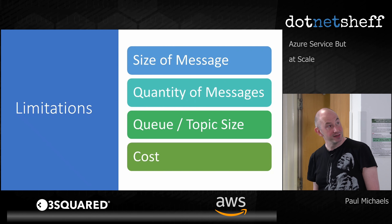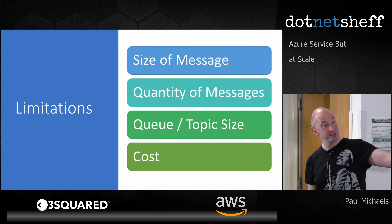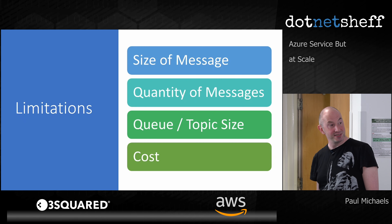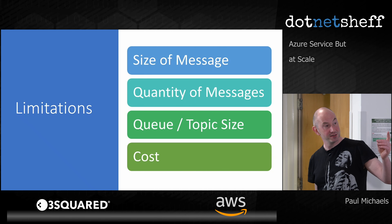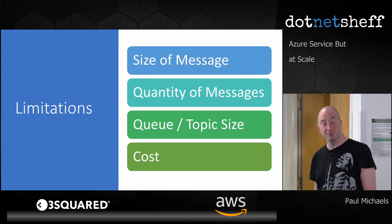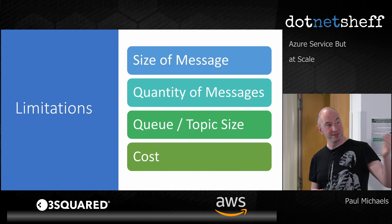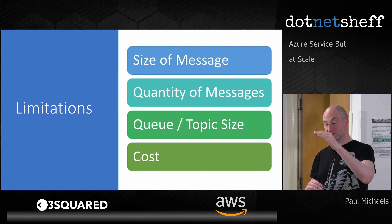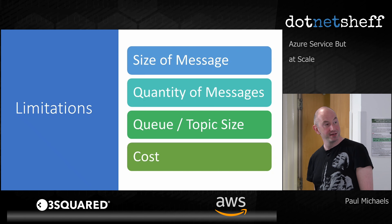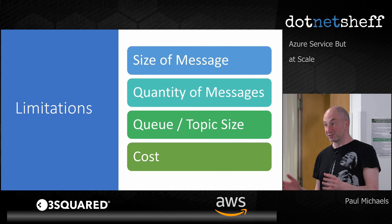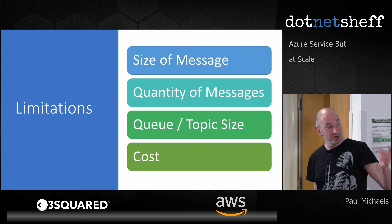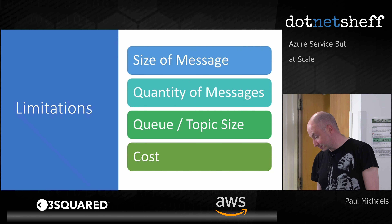So we have size of message and quantity of messages. There are concepts in Azure Service Bus and most message brokers — effectively queues and topics. Topics are sometimes known as pub-sub. A topic or pub-sub is effectively a local queue for each topic. There is a limitation on the size of that usually, and also cost, which I'll go into in more detail.